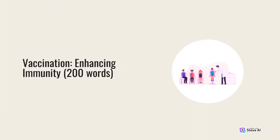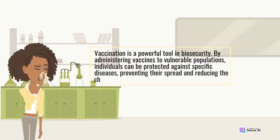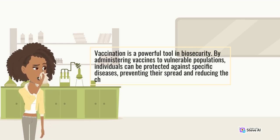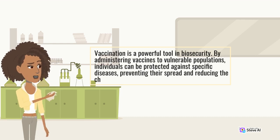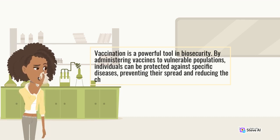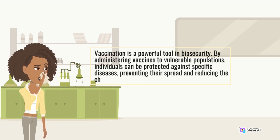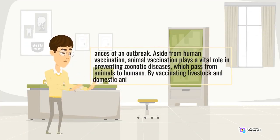Vaccination: enhancing immunity. Vaccination is a powerful tool in biosecurity. By administering vaccines to vulnerable populations, individuals can be protected against specific diseases, preventing their spread and reducing the chances of an outbreak. Aside from human vaccination, animal vaccination plays a vital role in preventing zoonotic diseases, which pass from animals to humans.